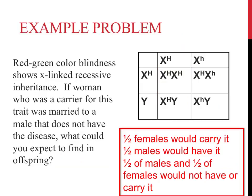Summing up this problem: one half of females would carry the trait for colorblindness, and one half of the males would actually have this disorder. One half of the males and one half of the females would not have nor carry this particular trait. One of the most important things to recognize when completing X-linked recessive Punnett squares is that males and females have different probabilities of inheriting these disorders.